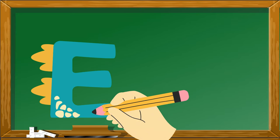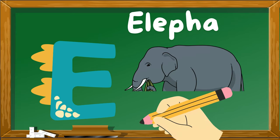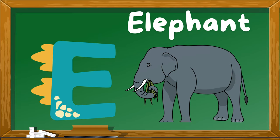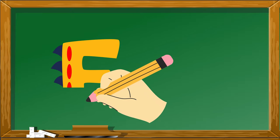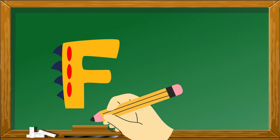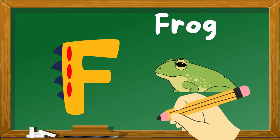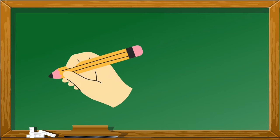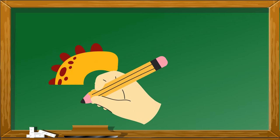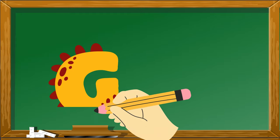E is for Elephant. F is for Frog. G is for Goat.